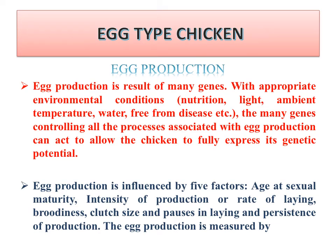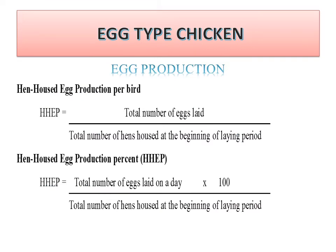Egg production is influenced mainly by five factors: age at sexual maturity, intensity of production (rate of laying), broodiness, clutch size, and persistence of production. These five factors are the main means by which we can increase egg production.